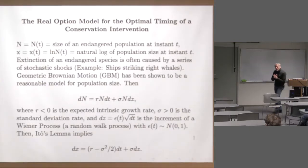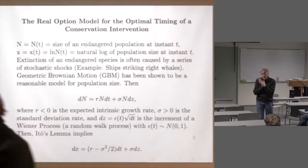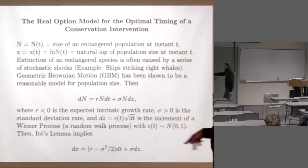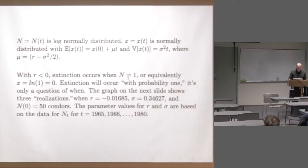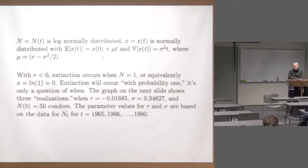R would probably be negative for a declining endangered species, so the effective drift rate for the log is even smaller due to the variance term. With geometric Brownian motion, N will be log-normally distributed and x will be normally distributed. The expected value of x(t) is x₀ + μt, where μ = r − σ²/2, and the variance is σ²t. The further you look into the future, the greater the potential variation and the greater the range for x.